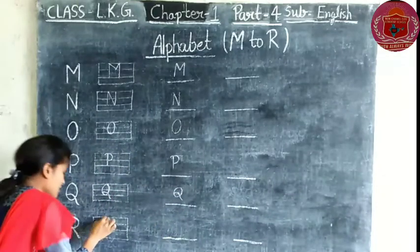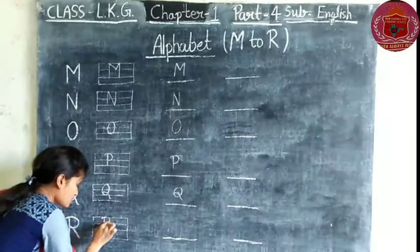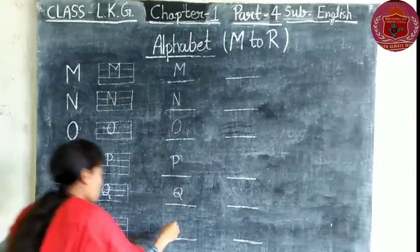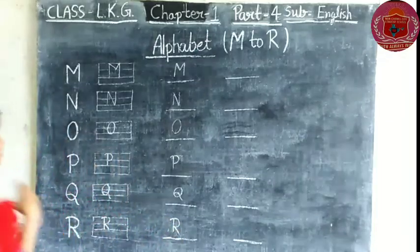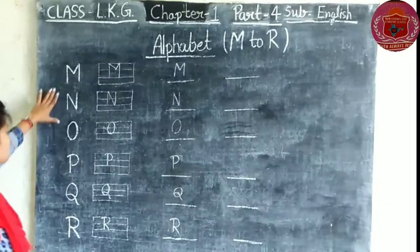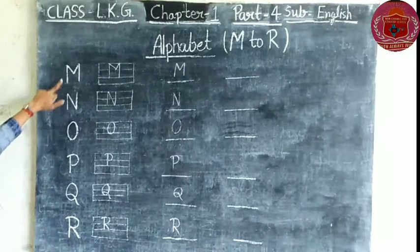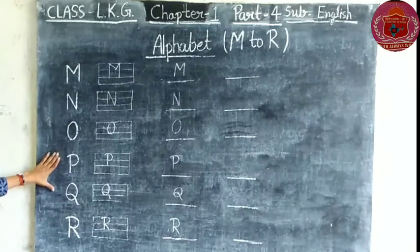And next is R. R. We use upper two lines to write R. So here is five letters, six letters. One, two, three, four, five, and six. Six letters.